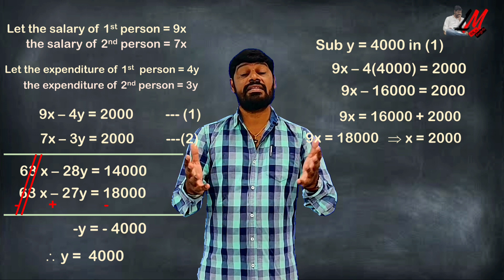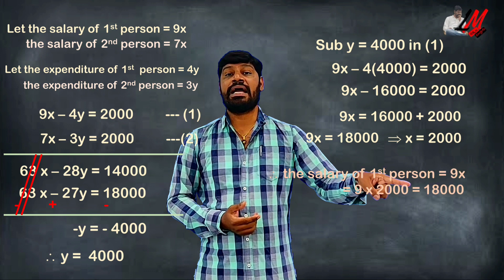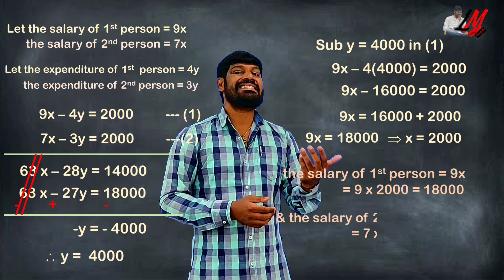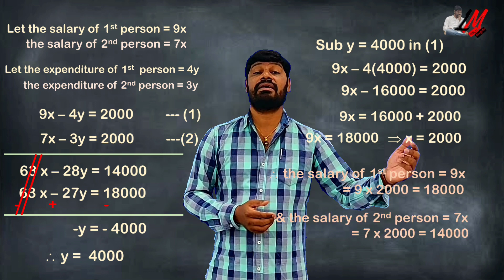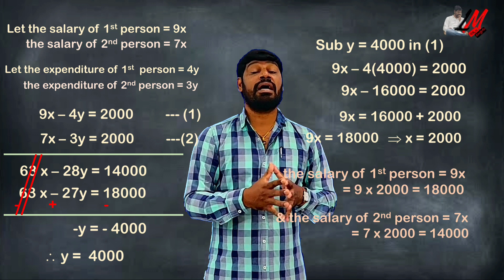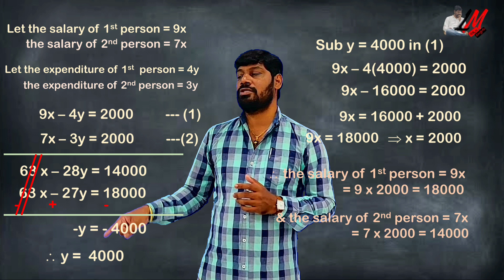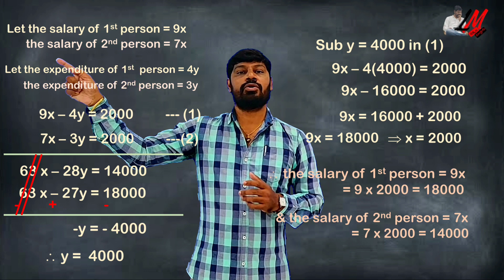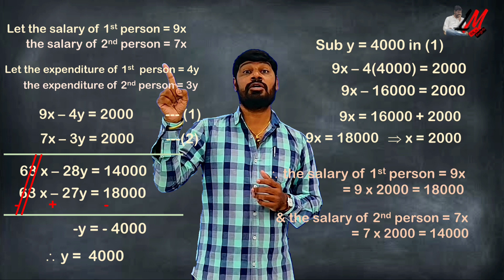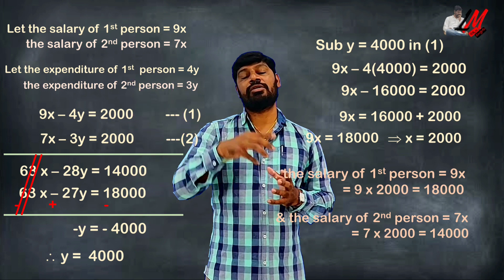Substituting y equal to 4,000 gives us x equal to 2,000. So the salary of the first person is 9x, which is 9 into 2,000 equals 18,000. The salary of the second person is 7x, which is 7 into 2,000 equals 14,000. The expenditure of the first person is 4y, which is 4 into 4,000 equals 16,000. The expenditure of the second person is 3 into 4,000 equals 12,000.